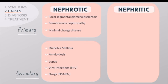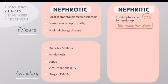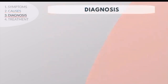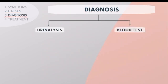Glomerulonephritis, on the other hand, most commonly develops after a streptococcal infection, typically in children aged 2 to 10, after recovery from the infection. Other causes of nephritis include IgA nephropathy, which is the most common glomerulonephritis, lupus nephritis, and rapidly progressive glomerulonephritis, which can present with very rapid renal failure. Additional causes include Goodpasture's disease, polyarteritis, Wegener's granulomatosis, and the diagnosis is generally made with urinalysis and blood tests.